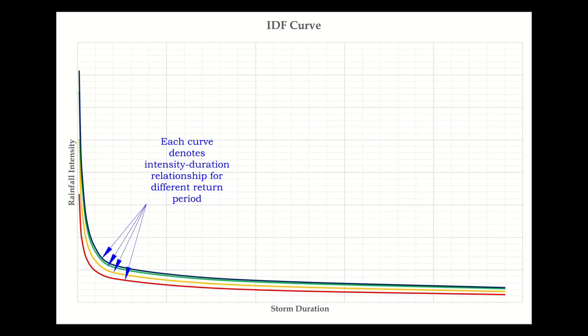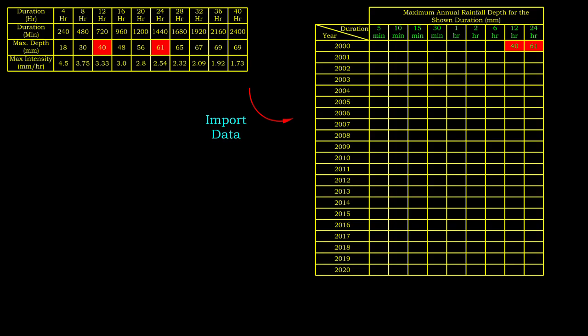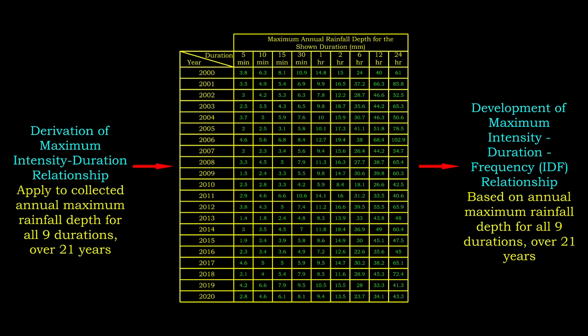Recalling the maximum rainfall depth we obtained in the previous video on the derivation of maximum intensity-duration relationship, let's assume those values are the maximum annual depth for corresponding rainfall duration for the year 2000. As for the storm duration, we only focus on 5, 10, 15, and 30 minutes as well as 1, 2, 6, 12, and 24 hours. Data for the remaining cells should be obtained from the same procedure. Here, we just assume the derivation of maximum intensity-duration relationship has been repeated for all these durations and years. This completed table is what we have at the end of the process. It will serve as the input for the development of IDF curve.